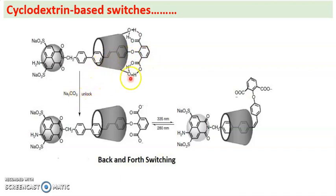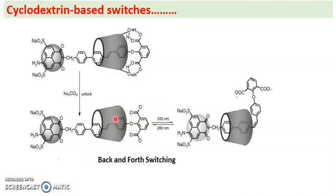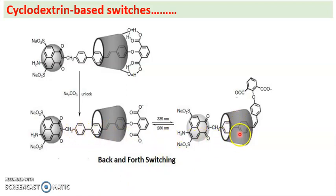When we add sodium carbonate, unlocking occurs — the hydrogen bonding is broken and the cyclodextrin is still residing on the stilbene unit. When irradiated with UV light of wavelength 335 nm, switching occurs: the cyclodextrin moves back from stilbene and now resides on the diphenyl unit. This is back switching. Now it is closer to the ANS (4-amino-1,8-naphthalimide sulfonate) unit.